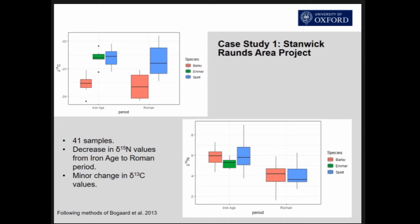In the top left-hand corner we have the delta 13C results, broadly looking at water status. In Britain we're expecting water availability not to fluctuate too much. The barley and spelt are about one per mil difference, which is what we see at many sites and seems to be a physiological difference. There's very little difference between the Iron Age and Roman period in terms of carbon. In terms of nitrogen, we have a decrease from the Iron Age to the Roman period in all crop types by about one per mil. Barley and spelt are very comparable in their values — we're seeing a decrease in manuring through time, but the same treatment of both main crops.